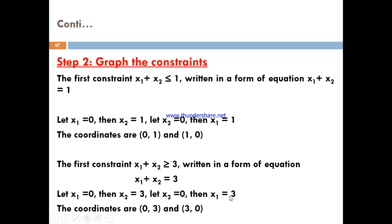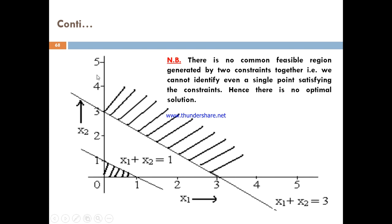When x2 equals 0, x1 equals 3, giving coordinates (0,3) and (3,0) for the second constraint. Graphing the constraints: x1 is on the horizontal axis and x2 on the vertical axis, with values up to 3. The first constraint has coordinates (0,1) and (1,0), while the second has (0,3) and (3,0). The first constraint region is greater than or equal to 0, and the second is less than or equal to 1, each defining a common area.